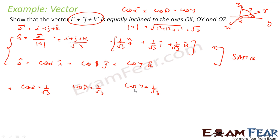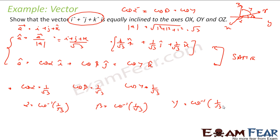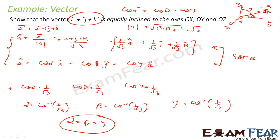So alpha is cos inverse of 1 by root 3, beta is also cos inverse of 1 by root 3, and gamma is also cos inverse of 1 by root 3. Thus, alpha equals beta equals gamma, all equal to cos inverse of 1 by root 3, and that is what I was supposed to show: that vector a is inclined equally to all the x, y, and z axes. Very simple.